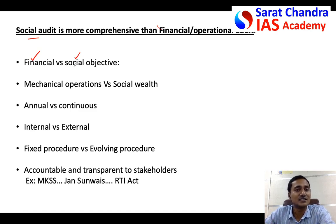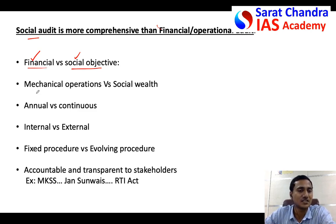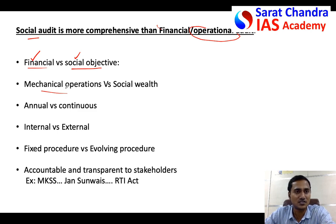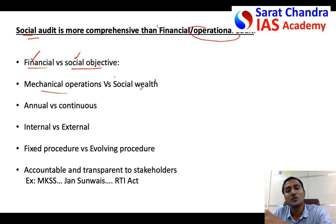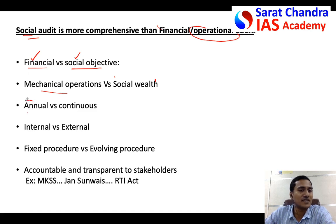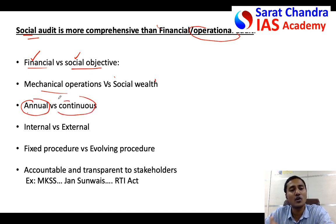First, traditional audit focuses on the financial aspect whereas social audit focuses on the social aspect — whether it is reaching the beneficiaries and how much benefit the consumers are getting. Second, the traditional operational audit focuses only on mechanical operations and procedures and does not look into the people involved, whereas social audit looks at the social wealth created — how much awareness has been generated through the government scheme. Third, traditional audit is annual — only once or twice a year — whereas social audit is a continuous process throughout the year.